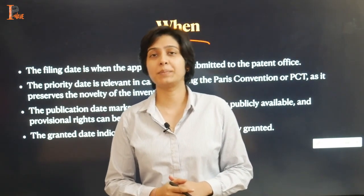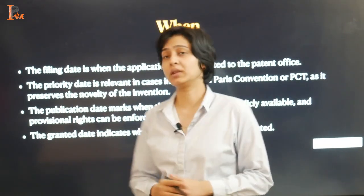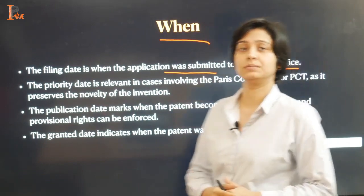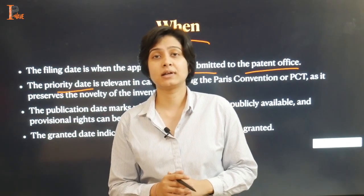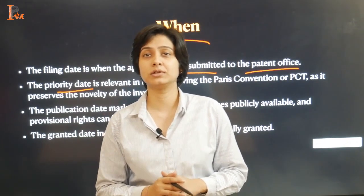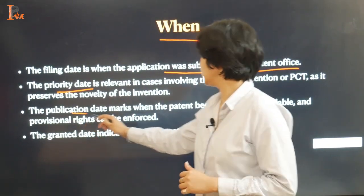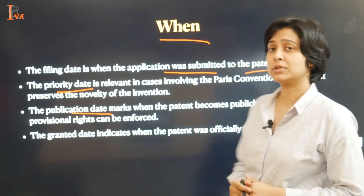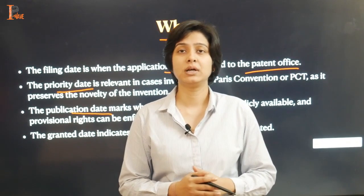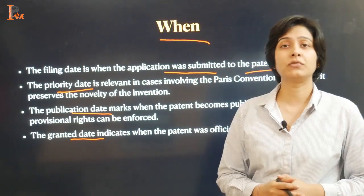Dates associated with the patent document hold importance. The filing date is when the application was submitted to the patent office. The priority date is relevant in cases involving Paris Convention or PCT, as it preserves the novelty of the invention. The publication date marks when the patent becomes publicly available and provisional rights can be enforced. The granted date indicates when the patent was officially granted.